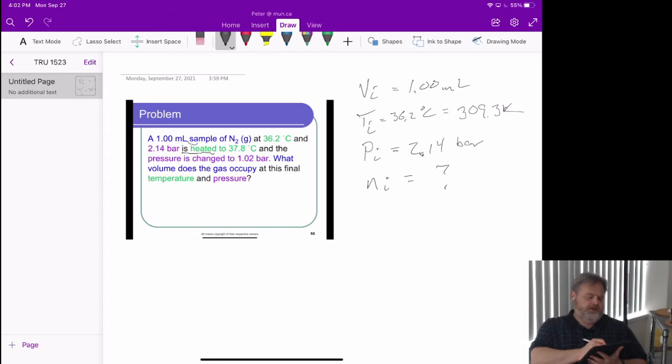What we do know is we have a sample of N2, and then we're asked what volume does the gas occupy. So this tells us something very interesting about the number of moles - it's going to be constant during the process. We're doing this in a balloon or something, and nothing is leaking in or out.